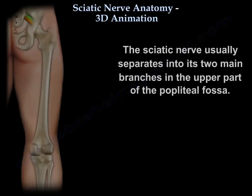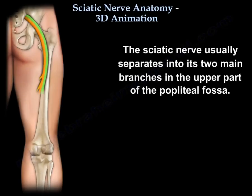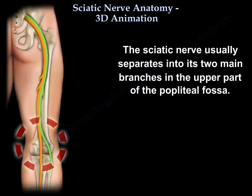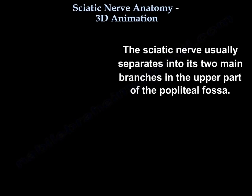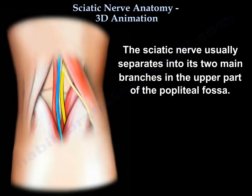The nerve usually separates into its two main branches in the upper part of the popliteal fossa.